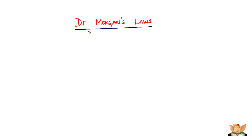In this video, let us look into De Morgan's laws, one of the more important laws as far as sets is concerned. There are two laws in De Morgan's law. The first one is the complement of A union B equals the intersection of their complements individually. That's what the first law of De Morgan's says.